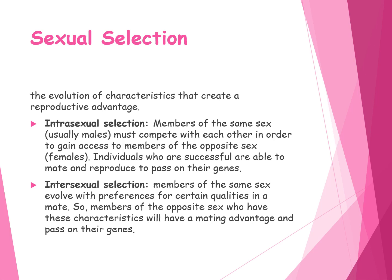Intrasexual selection is where members of the same sex — typically males — compete with one another in order to mate and reproduce with members of the opposite sex, typically females. Anything that has allowed that male to be successful in that competition will allow him to mate, reproduce, and pass those traits on to his offspring. For example, if a male is more aggressive and wins the fight, or is stronger, that trait will be passed on. So males may become more aggressive and stronger as time progresses.